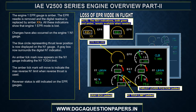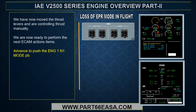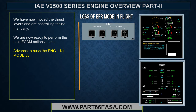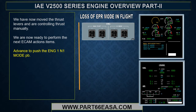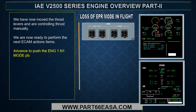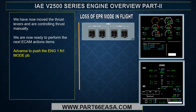The amber tick mark will move to indicate the max reverse N1 limit when reverse thrust is used. Reverser status is still indicated on the EPR gauges. We have moved the thrust levers and are controlling thrust manually, and are now ready to perform the next ECAM action items.